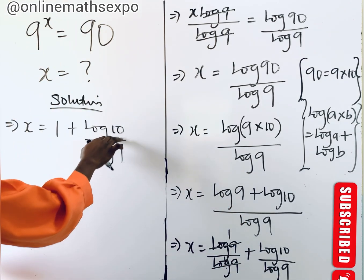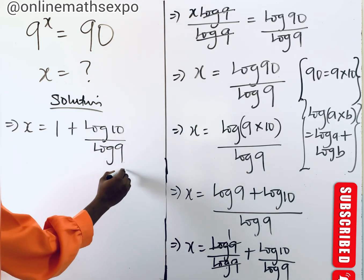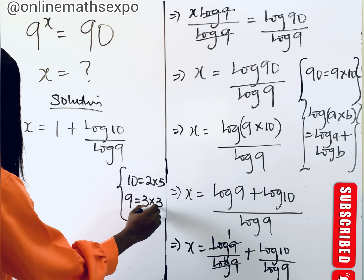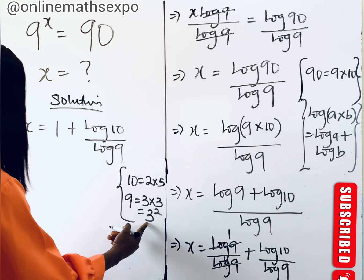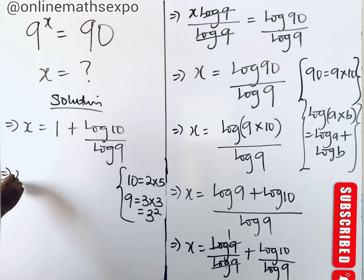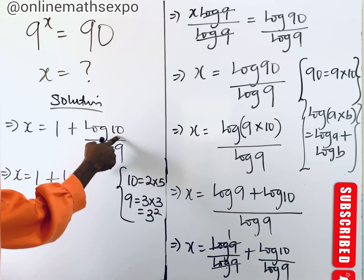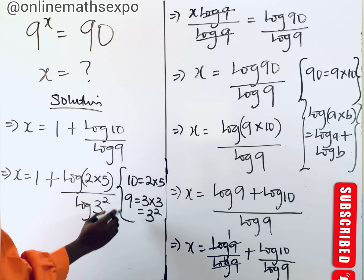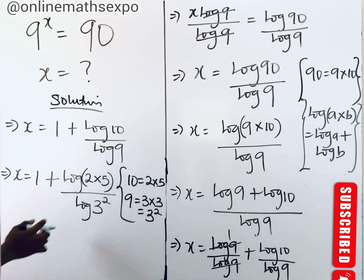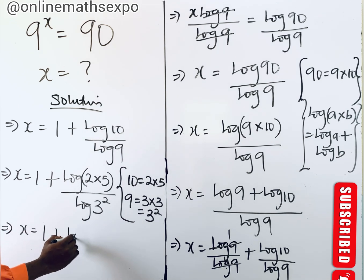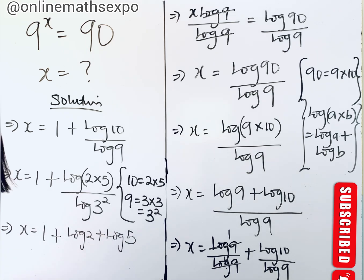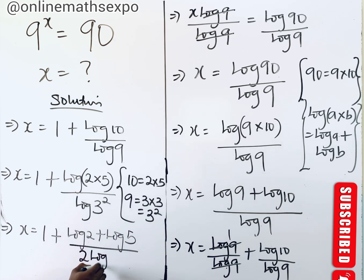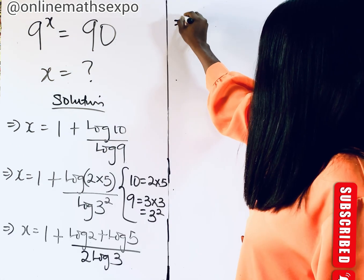We reduce to prime product form. Remember that 10 is the same as 2 × 5, and 9 is the same as 3 × 3, which is 3 raised to the power of 2. So x equals 1 plus log of (2 × 5) divided by log of 3². Applying the product rule again, the numerator becomes log 2 plus log 5. And since the power multiplies, the denominator becomes 2 log 3.